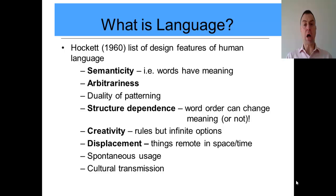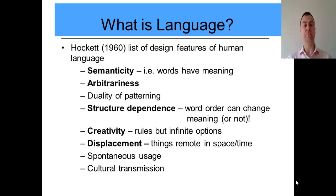Not all communication is language — some forms of communication don't meet the definition of language. A number of people have attempted to define what features language has that other forms of communication perhaps don't. In your textbook there's a detailed list originally by Hockett that looked at the design features human language must have. I'll just pick out a few. First, there's the idea of semanticity — words or labels such as 'book' have a meaning, a semantic content. If I say 'car', you'll think of a metal box on four wheels with an engine.